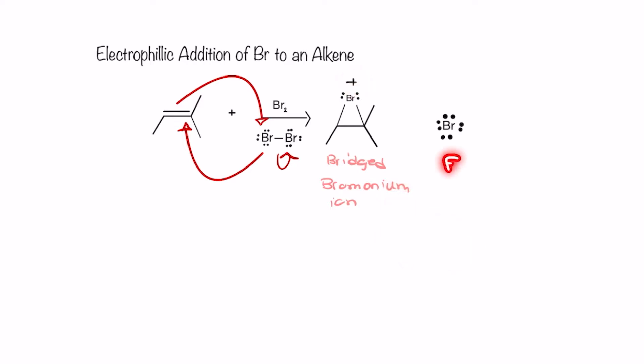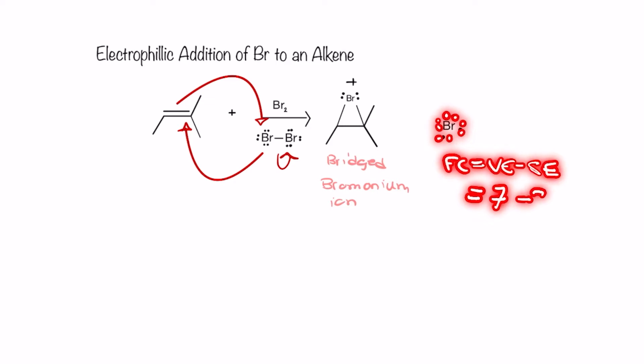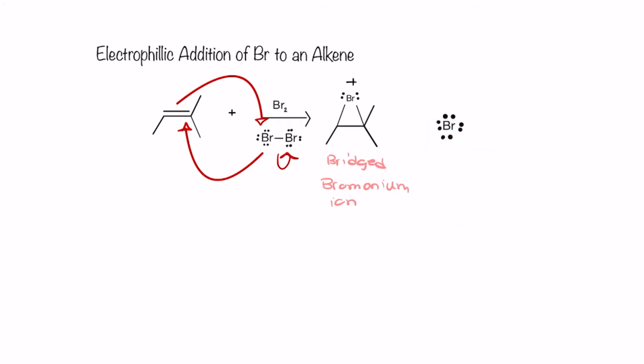And if we calculate the formal charge for this bromide over here, it's going to be equal to seven valence electrons, while surrounding it right now is a total of eight electrons. Seven minus eight is going to be a charge of negative one, so this bromide ion has a charge of negative one. Now that we've successfully recalculated our charges, we need to reassess who will be our nucleophile and who will be our electrophile in this next step of the reaction.